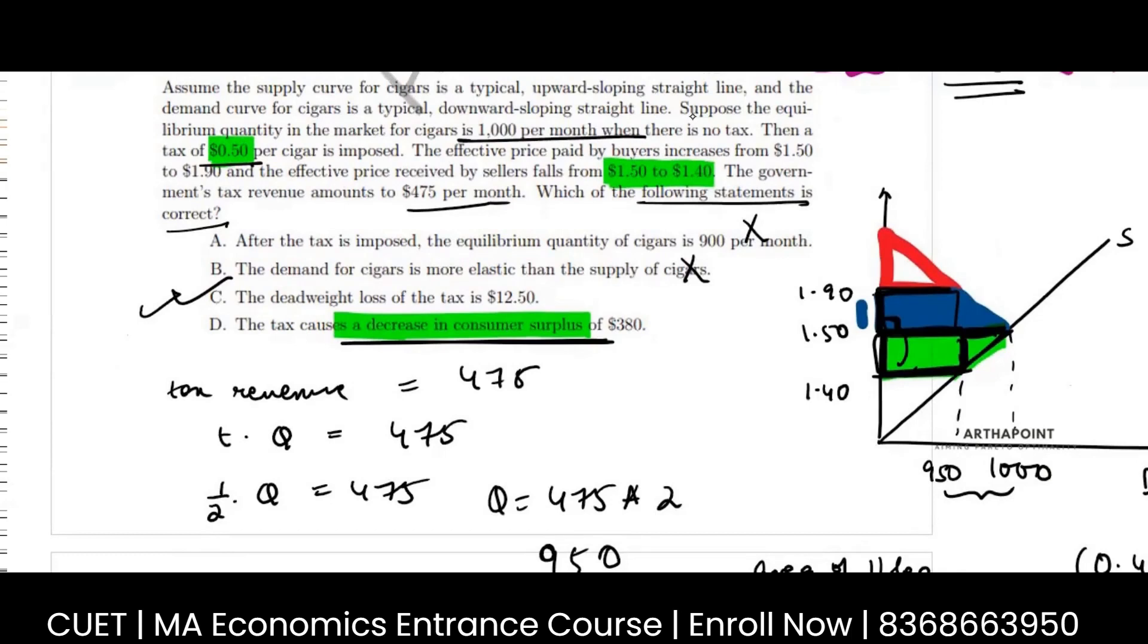The consumer is going ahead and going from 1.50 to 1.90. So here the consumer is bearing 0.40 cents of the tax. So the consumer is bearing more burden, and the producer is bearing just a burden of 0.10. It is going from 1.5 to 1.4, so the producer is bearing less burden.